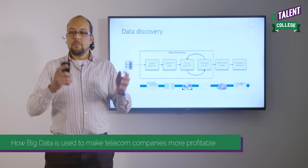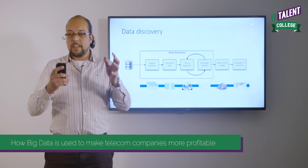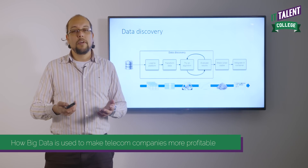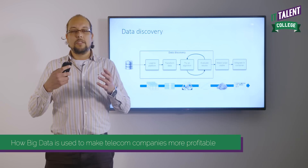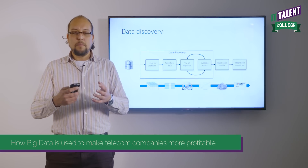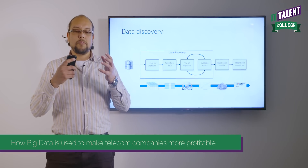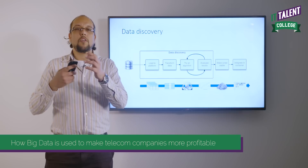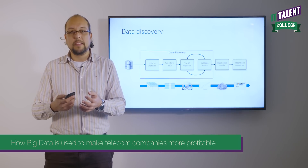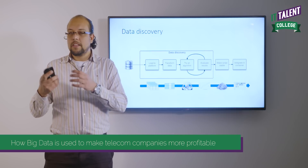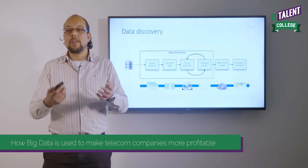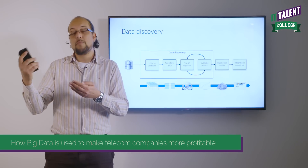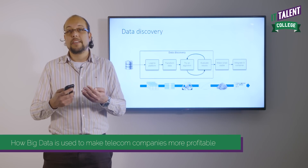You run this data through an algorithm — maybe a GLM or a random forest — and the output predicts, without knowing the outcome, what the outcome would likely have been. You then evaluate whether the model is good by checking whether your predictions match what actually happened. The more predictions that match up, the better your model.